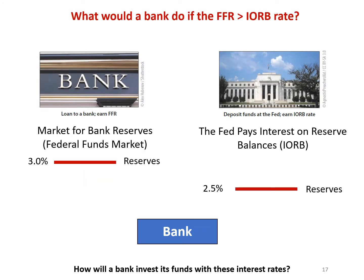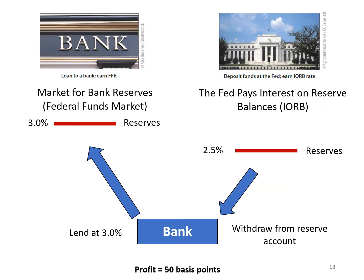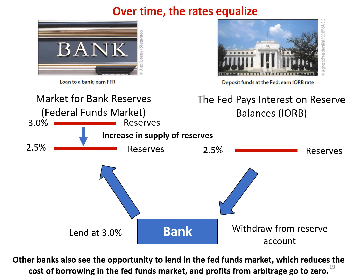What if the federal funds rate is higher than interest on reserve balances? Arbitrage works in this case too, just in reverse. Banks will withdraw money from their reserve accounts and lend in the federal funds market to earn a higher rate. As banks respond to this opportunity, the increase in supply of reserves in the federal funds market will result in a lower federal funds rate. This will continue until banks no longer see the opportunity to profit. Over time, the rates will equalize. Arbitrage is the reason these short-term rates remain closely linked, and it makes interest on reserve balances an effective tool for guiding the federal funds rate. The key point: arbitrage ensures that the Fed can steer the federal funds rate by adjusting the interest on reserve balances rate.